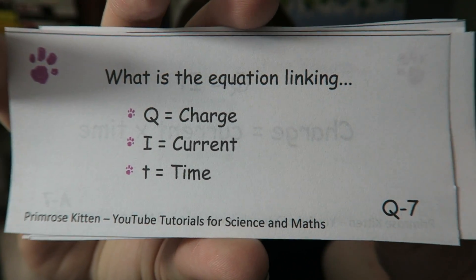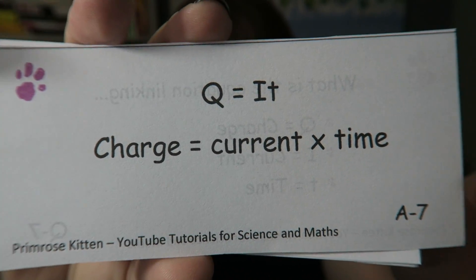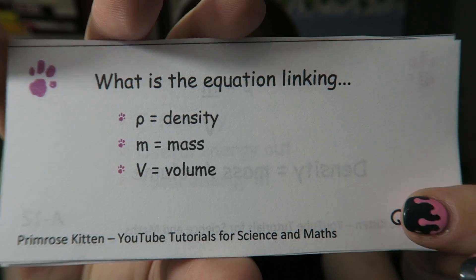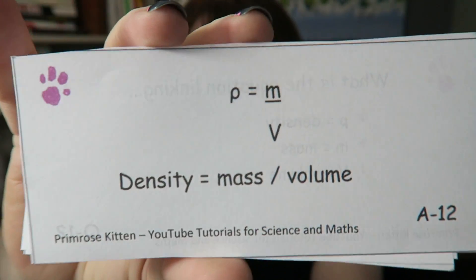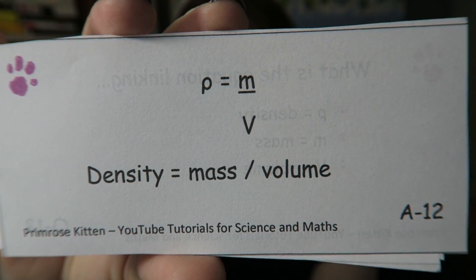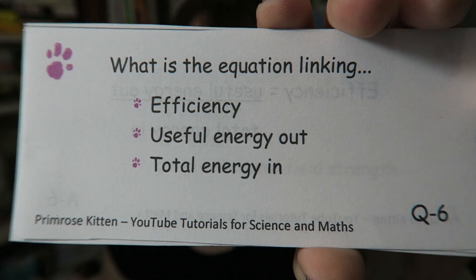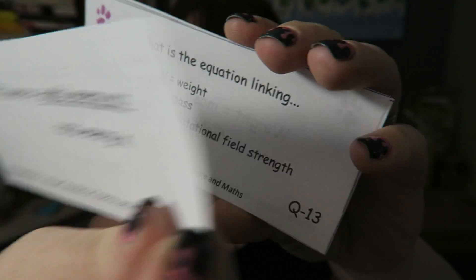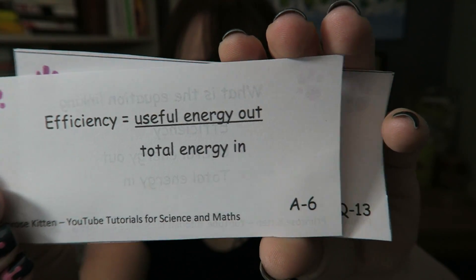What is the equation linking charge, current, and time? What is the equation linking density, mass, and volume? Density is mass divided by volume. What is the equation linking efficiency, useful energy out, and total energy in? Efficiency is useful energy out divided by total energy in.